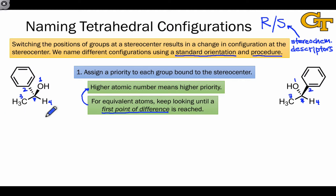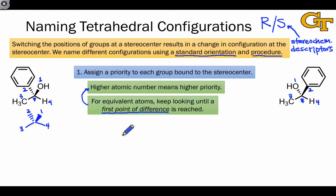Once we've prioritized each of the groups attached to the stereocenter, everything else in the molecule becomes irrelevant, and we can simplify the picture down to the tetrahedral stereocenter with just the numbers attached. We can simply lay down the numbers to determine the RS designator without worrying about the specific atoms once we've made the prioritization. Notice that the two examples on the left and right of this slide should have different stereochemical descriptors, since the priorities are oriented differently about the central stereocenter — the number 2 group is coming out towards us on the right, but going back away from us on the left.